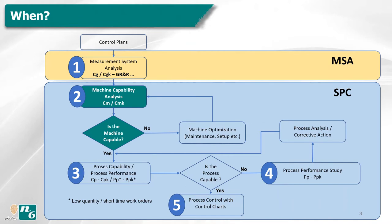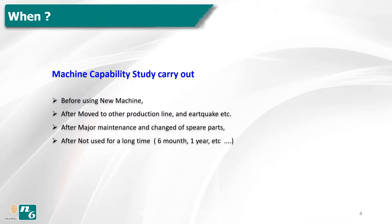In addition, all statistical process control applications must be carried out after a measurement system analysis study. We should carry out the machine capability study before using the machine, after moving to another production line or after an earthquake, after major maintenance or change of spare parts, and after the machine has not been used for a long time — such as six months, one year, or more.